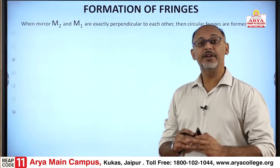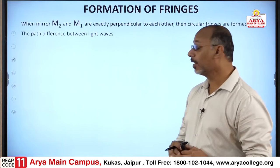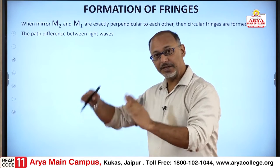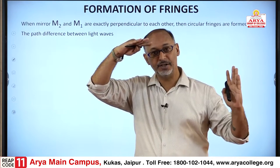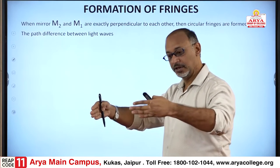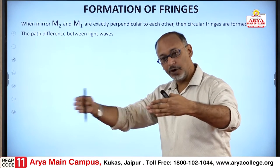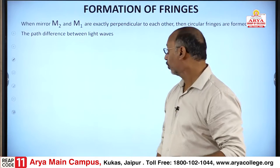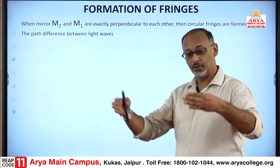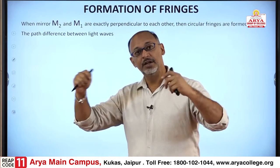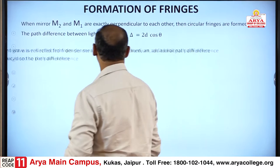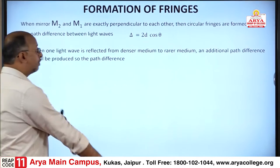You have to remember this: whenever mirror M1 and M2 are placed such that M1 and M2 are perpendicular to one another — as shown in the diagram where M1 is on one side and M2 is horizontal — then the fringes will become circular fringes, and in such conditions the path difference is generated.